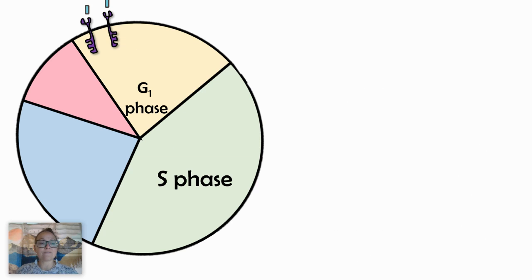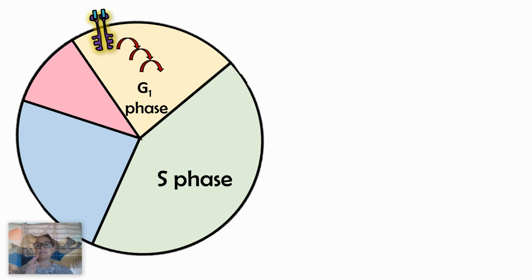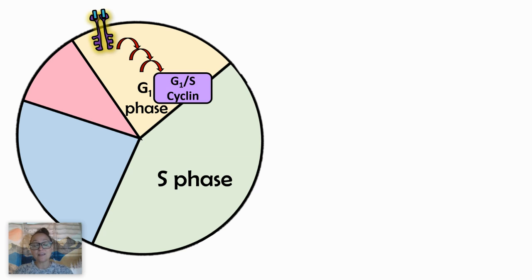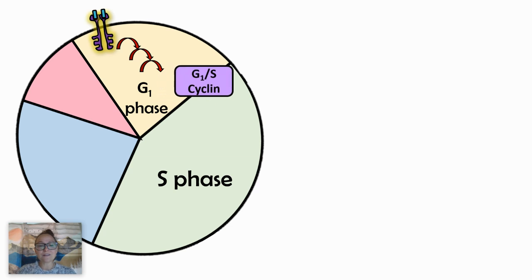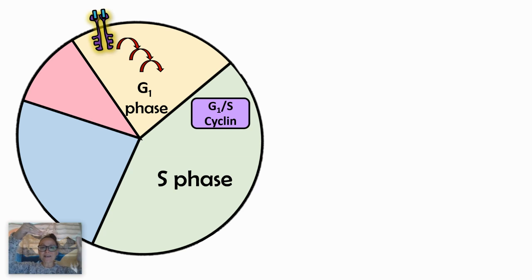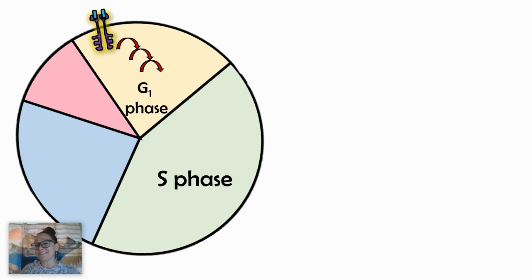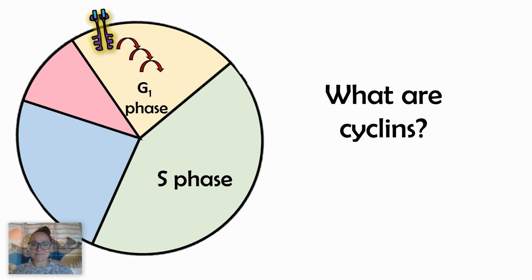When external signals attach to the receptor, that leads to proteins being phosphorylated and activated within the signaling cascade. The cell response is to produce a protein called cyclin — in this example, the G1/S cyclin, though there are actually multiple different kinds. Cyclin proteins are what help the cell move from one step of the cell cycle to the next. They're produced, used, and then degraded — they don't last forever.